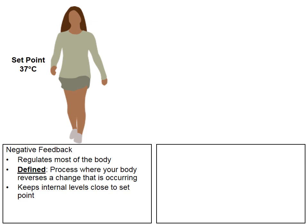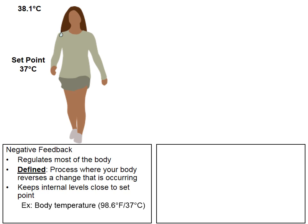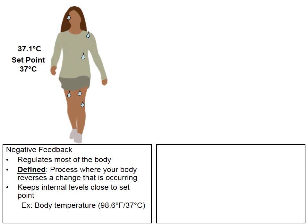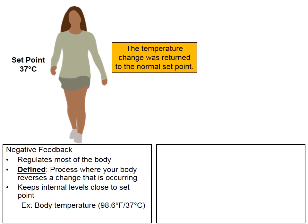Let's look at body temperature as a great example of negative feedback. We have a set temperature of about 37 degrees Celsius or 98.6 degrees Fahrenheit. Let's say you go for a walk — the longer you walk, the more heat your body generates, so now the temperature rises to 37.8, then 38.1 degrees. We start to produce a lot of sweat, which is designed to cool us off. As the sweat evaporates, heat is carried away from the body. The more sweat we produce, the more heat is carried away, and over time we return to the 37 degrees Celsius set point — a great example of negative feedback.